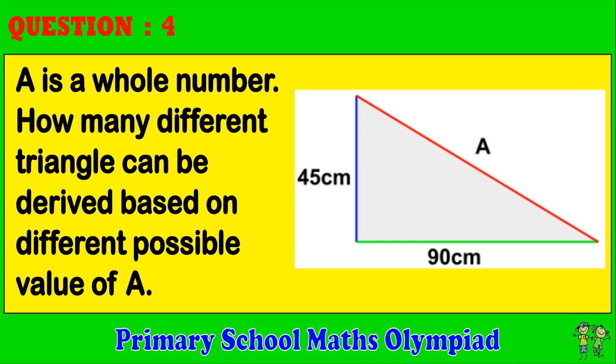Question 4. The triangle below has sides with lengths of 90 cm, 45 cm, and A cm. The value of A must be a whole number. How many different triangles can be derived based on different possible values of A?